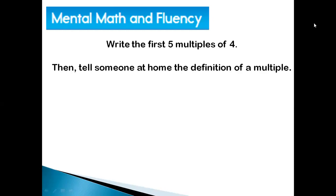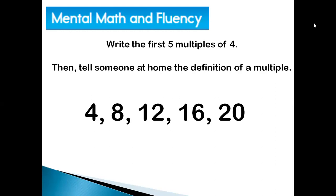Let's go over your answer. The first five multiples of four are four, eight, twelve, sixteen, and twenty. Hopefully you told somebody at home that a multiple is the product of that number — in this case the number four — and another number.